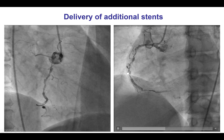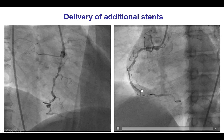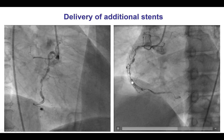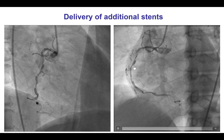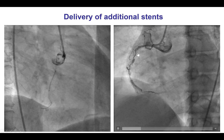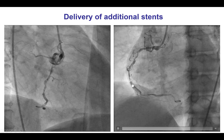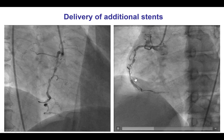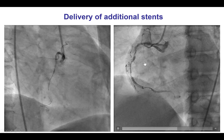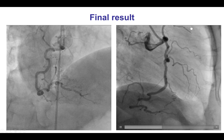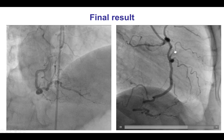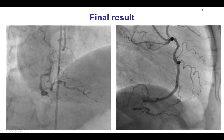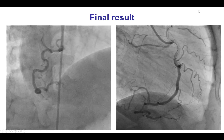Once very tortuous vessels are wired, it is not uncommon to see a very ragged appearance, which is not necessarily a dissection problem but may just represent straightening of the tortuosity from the guide wire. After delivering the stents, a nice result was achieved with TIMI III flow in the vessel.